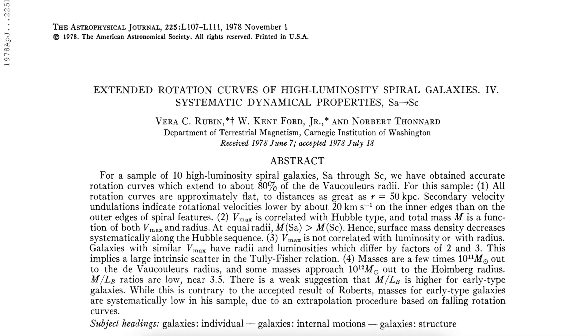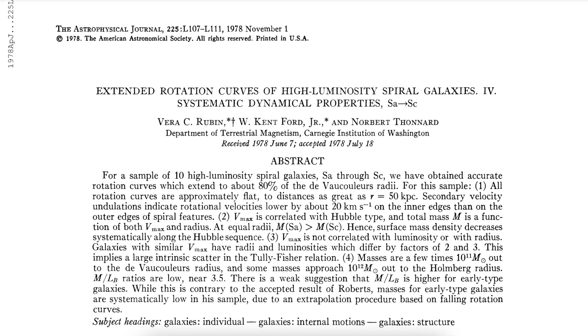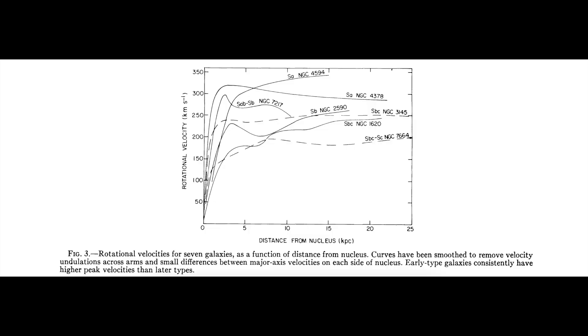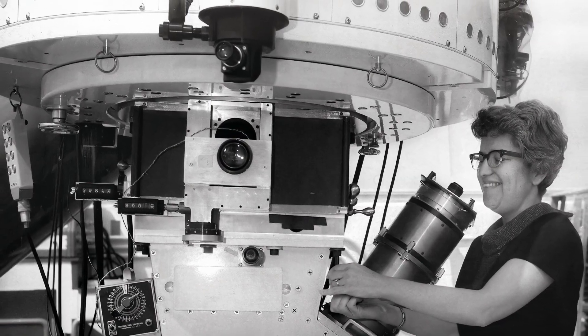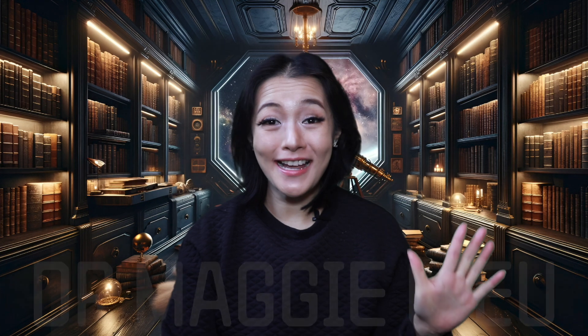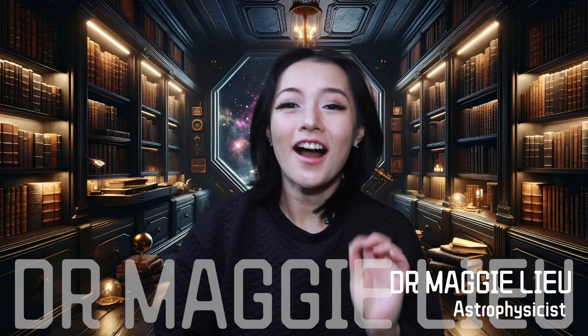In 1970, astronomer Vera Rubin made this galaxy rotation curve and she gasped — either physics is broken or there is dark matter. Hey Space Cats, I'm Dr. Maggie Lu, and this week I did a fun tutorial with my first year physics students at the University of Nottingham that I just had to share with you.